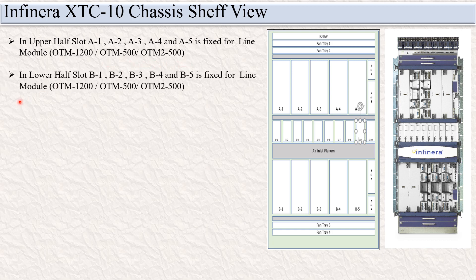In the lower half slot, B1, B2, B3, B4, B5 — same as the upper half, except for the line module. You can insert OTM 1200, OTM 500, or OTM 2500 cards.